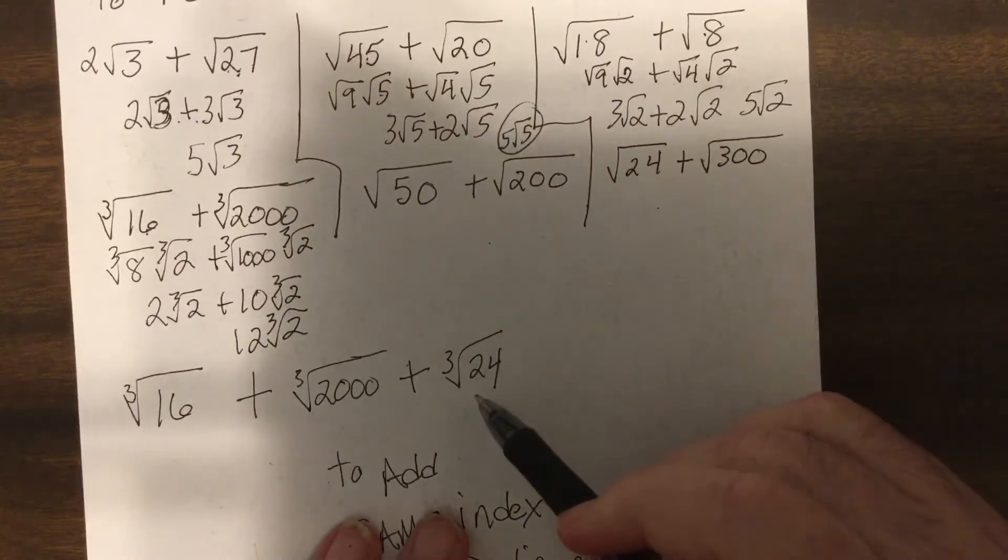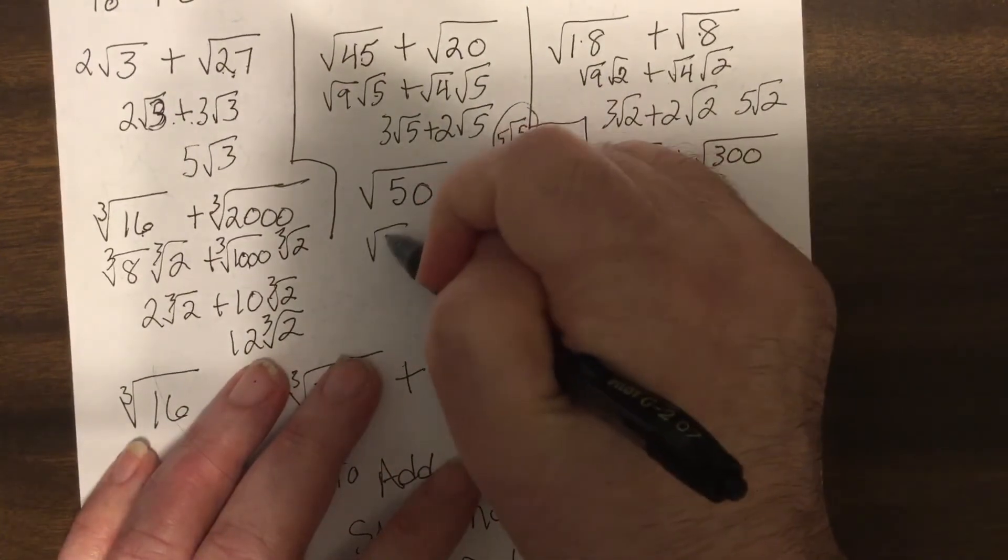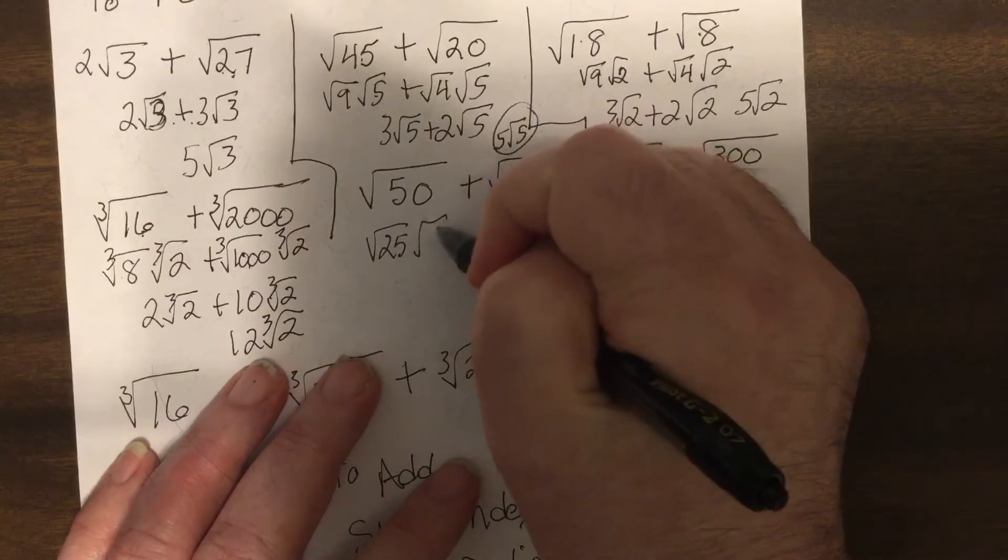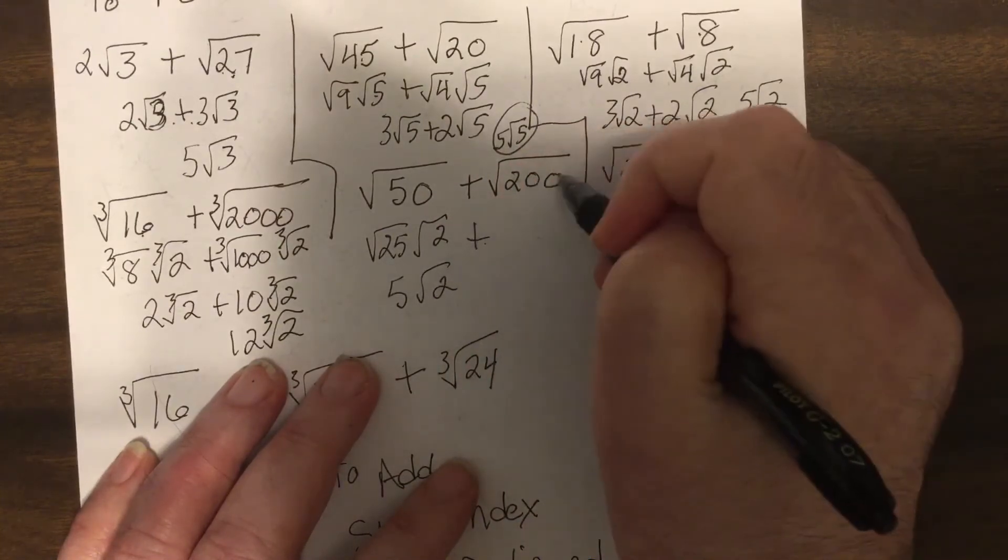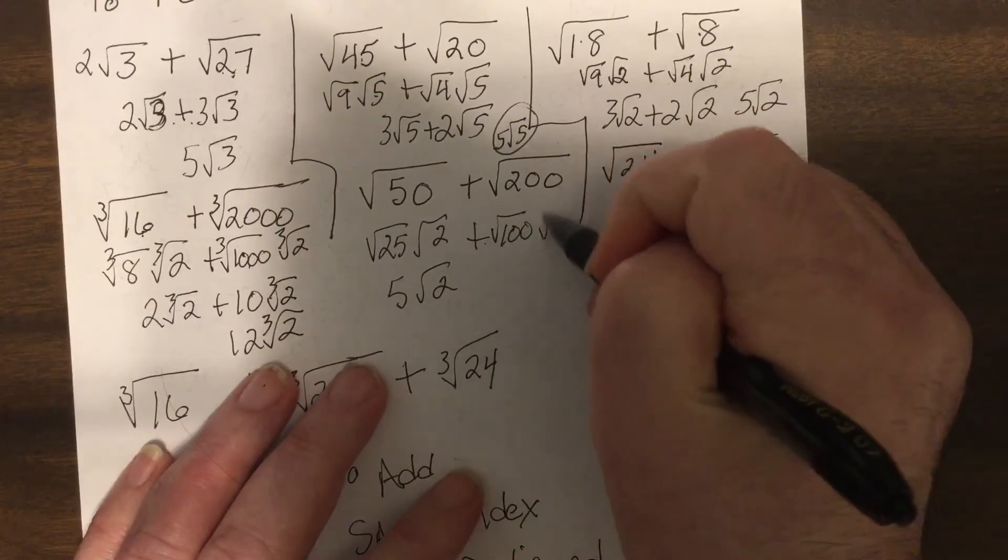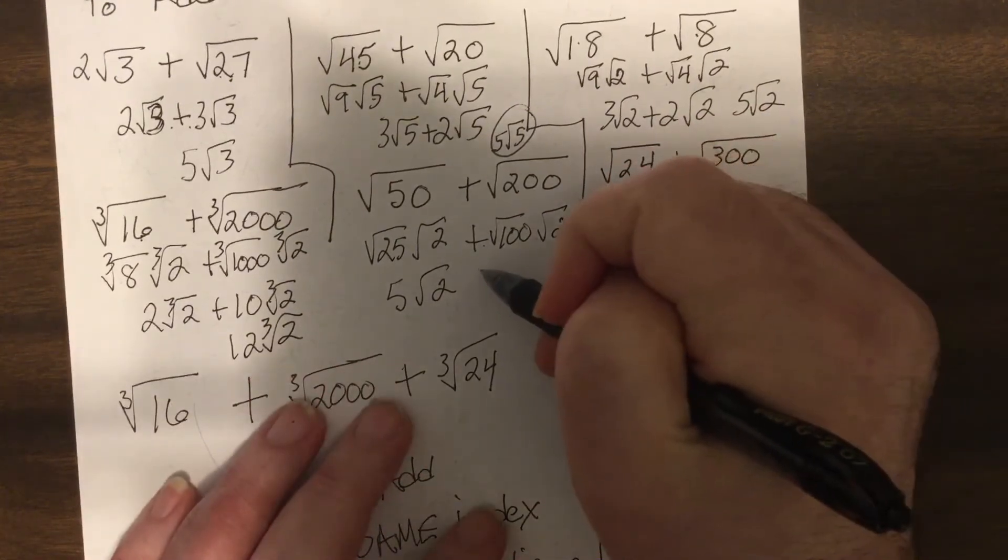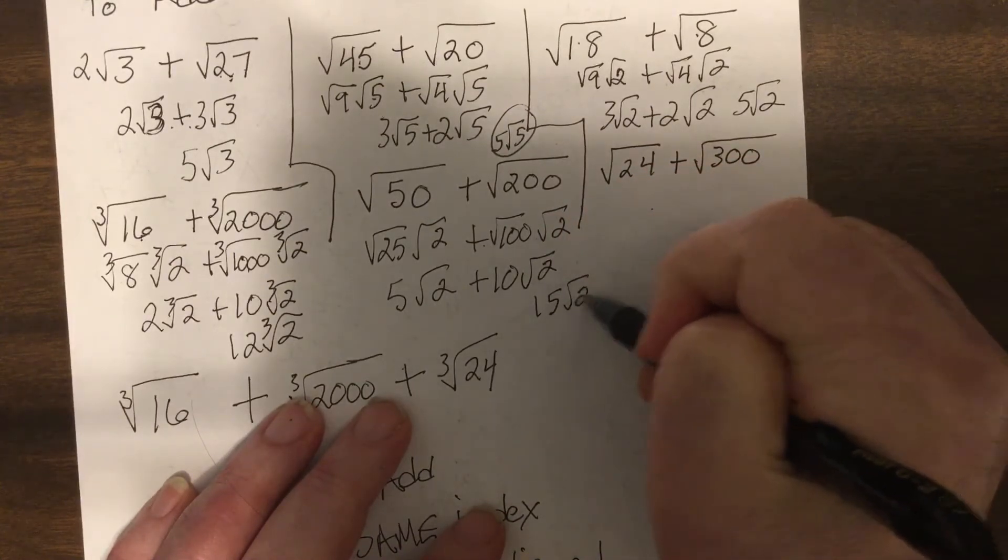Try those two on your own right now. Okay. 50 is 25 and two. So it would be five square root of two. 200 would be square root of 100. 100 is a perfect square. Two, so that would be 10 square root of two. So that's 15 square root of two.